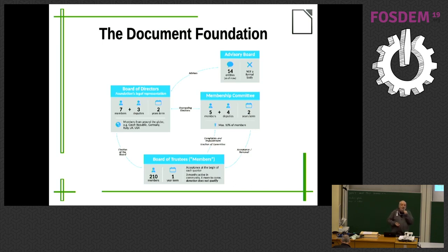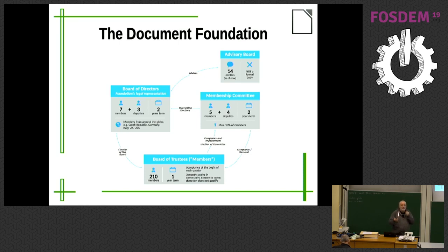Then we have an advisory board — both non-profit organizations like the Free Software Foundation, FSF Europe, KDE, and GNOME, who don't pay anything, and for-profit companies that are members of the ecosystem who pay according to their turnover. But what they pay is not a substantial amount, because we wanted to have an independent project. We didn't want any company able to say 'I put $1 million on the table so I have a say in how you manage the community.'